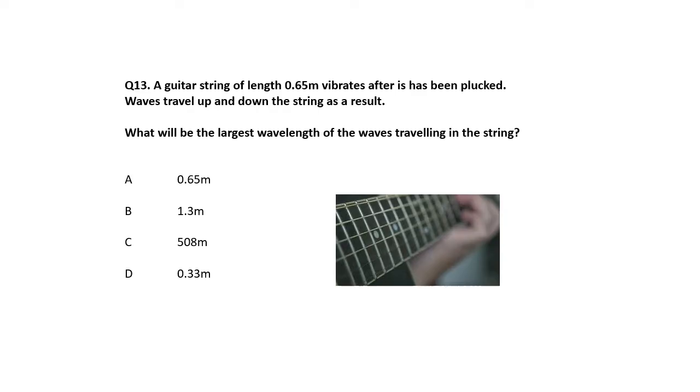Here we go. Guitar string of length 0.65 meters vibrates after it has been plucked. Waves travel up and down the string. What will be the largest wavelength of the waves? Now your fundamental, we call it the fundamental, is when the string does something like this. So there's a node there and a node there and an anti-node there. And that's the length of the string. And that is half a wavelength. Each of these loops, this is your first harmonic and that is half a wavelength. So if the length of the string is half a wavelength, then the wavelength is that, which is double it. So it is B because the wavelength is two of them.